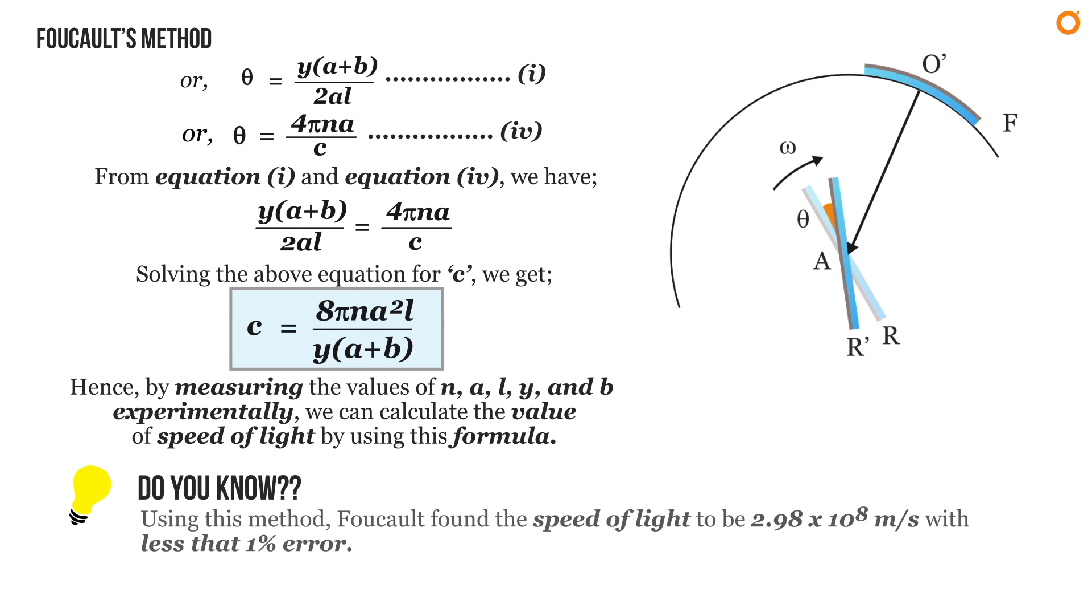Do you know, using this method Foucault found the speed of light to be 2.98 times 10 to the power 8 meters per second with less than 1 percent error.